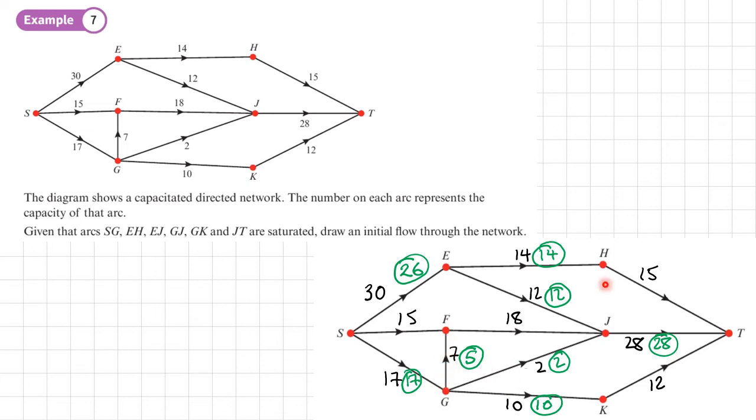Then we'll move our way to the top of the diagram here. So if this is a flow of 14 going in, there needs to be 14 going out. And the same along the bottom here. If I've got 10 going in, then this needs to be 10 going out here.